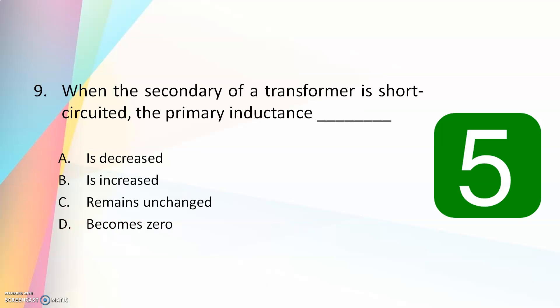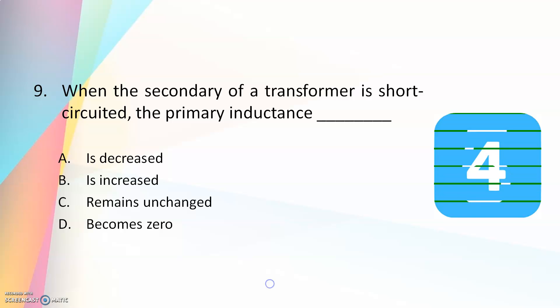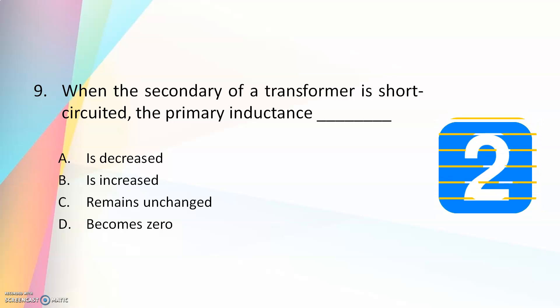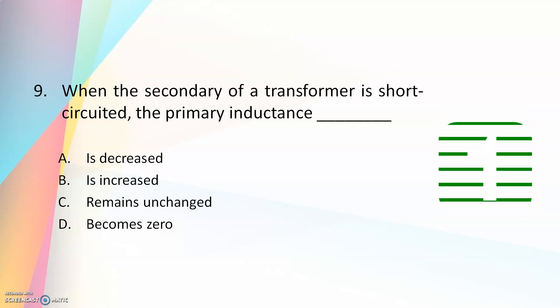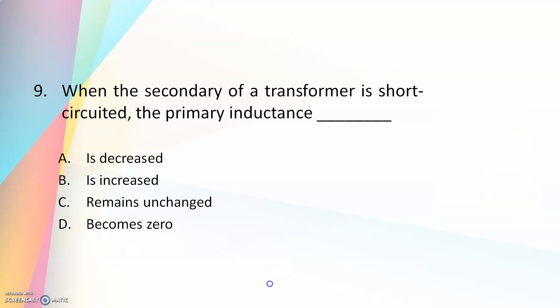Ninth question: when the secondary of a transformer is short-circuited, the primary inductance — is decreased, is increased, remains unchanged, or becomes zero. The answer is the primary inductance is decreased when you short-circuit the secondary of a transformer.